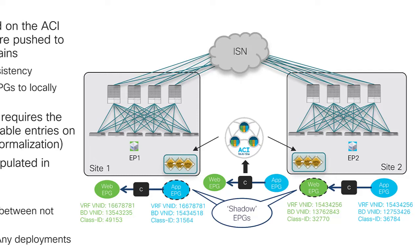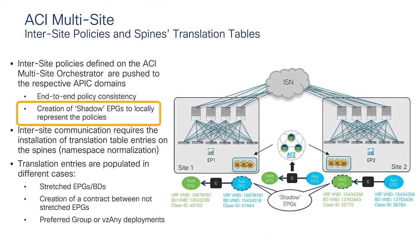When we configure the specific policy in each APIC site, this leads to the creation of shadow objects — shadow EPGs and shadow bridge domains. Inside each site, we need to recreate the same relationship between EPGs defined on the Multisite Orchestrator. In Site 1, since the app EPG only lives in Site 2, the APIC in Site 1 creates a shadow copy of the app EPG.